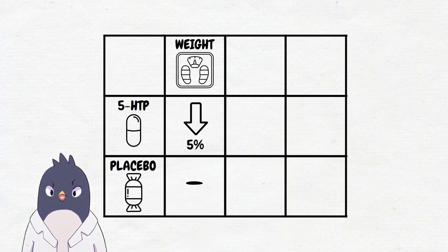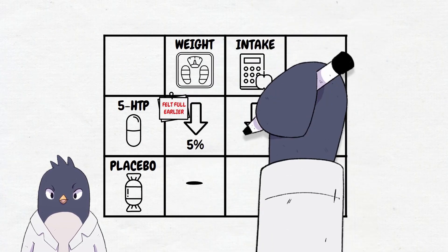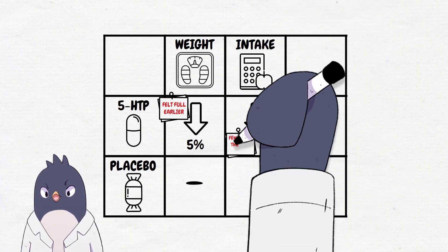This is probably because nearly 100% of the 5-HTP group reported feeling full earlier, and they lowered their calorie intake significantly both in the first six weeks and last six weeks of the study.